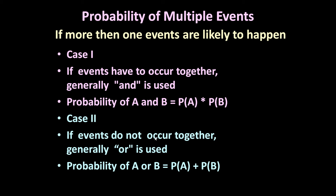Case 2: if events do not occur together, the OR term is used — either A or B will happen, but both will not happen. In that case a plus sign is used. First determine the probability of A and the probability of B separately; if you add them you get the probability of A or B. Today in this lecture we will discuss Case 1, and in a subsequent lecture we will discuss Case 2.